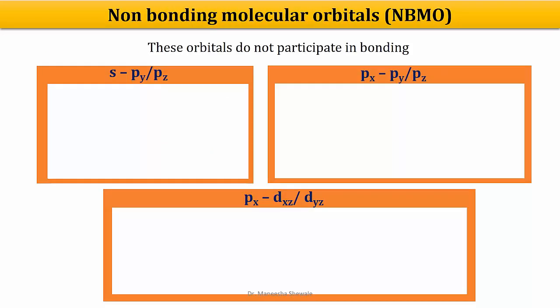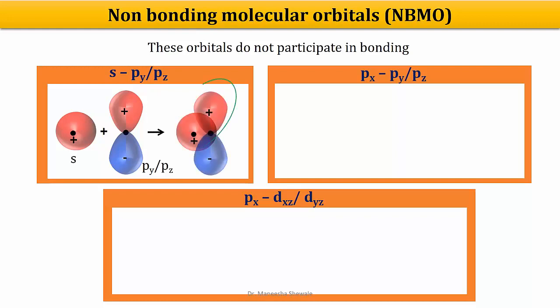Finally, we will see the formation of non-bonding molecular orbitals. These orbitals do not participate in bonding. The first combination is where an S orbital combines with a PY or PZ atomic orbital. Earlier we saw that when an S orbital combines with a Px orbital, a sigma molecular orbital forms. But when we have S and PY or PZ, on one side there is a plus-plus combination and on the other side it is plus-minus, so the effects cancel and we get non-bonding molecular orbitals.